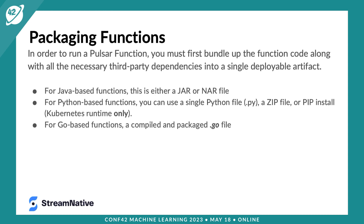Before I get into the demonstration — we're going to package third-party machine learning libraries, and when you deploy them to the runtime environment, it's critical that you bundle all these dependencies with them since they won't be available inside Pulsar itself. For Java-based functions, you can use either an uber JAR or a NAR file. I prefer the NAR file for multiple reasons, and that's what I'll demonstrate today. For Python and Go, different options are available.